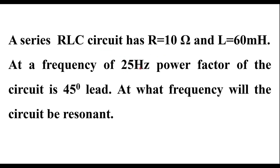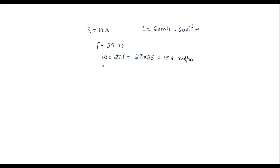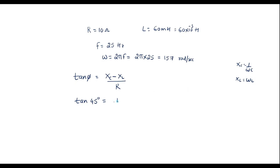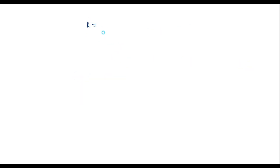At a frequency of 25 Hz, the power factor of the circuit is 45 degree lead. In a series RLC circuit, the phase angle between current and voltage is given by tan φ = (Xc − XL) / R. Here φ is 45 degrees, so tan 45° equals 1, and we can write 1 = (1/ωC − ωL) / R, or R = 1/ωC − ωL.